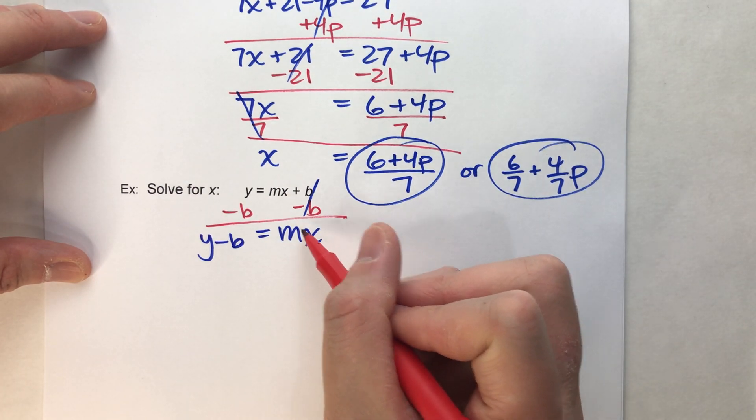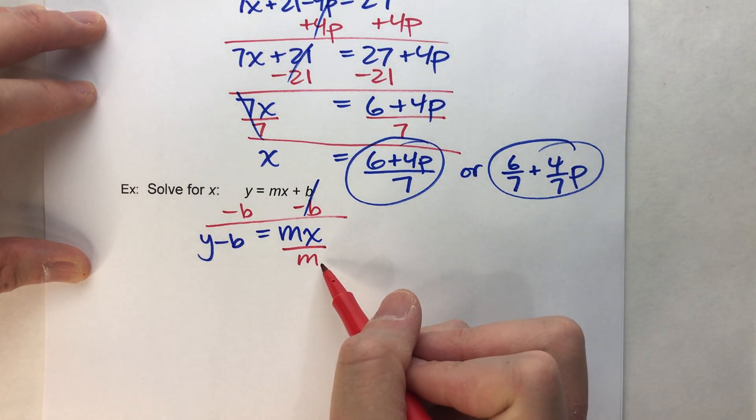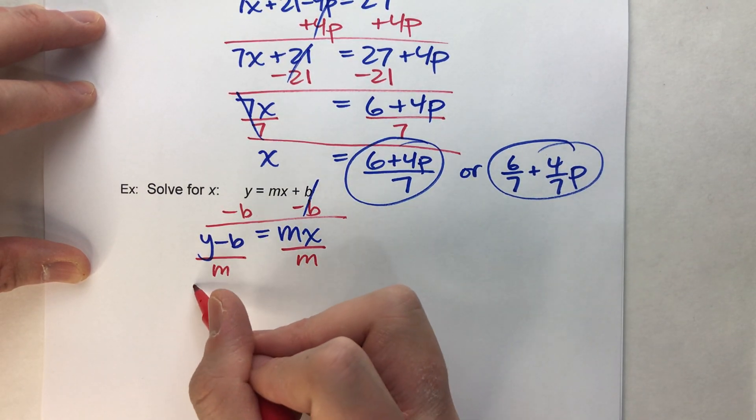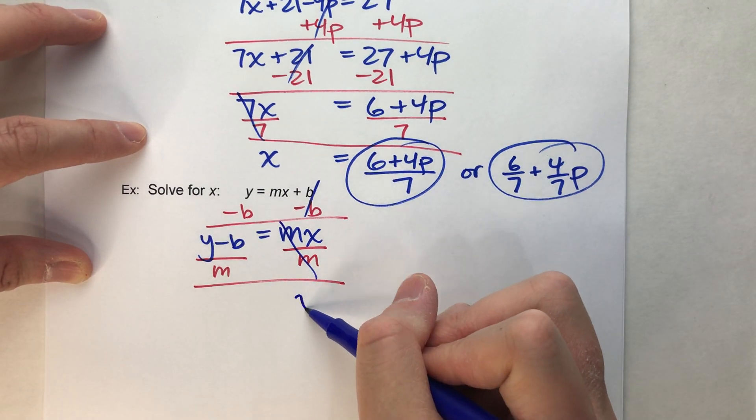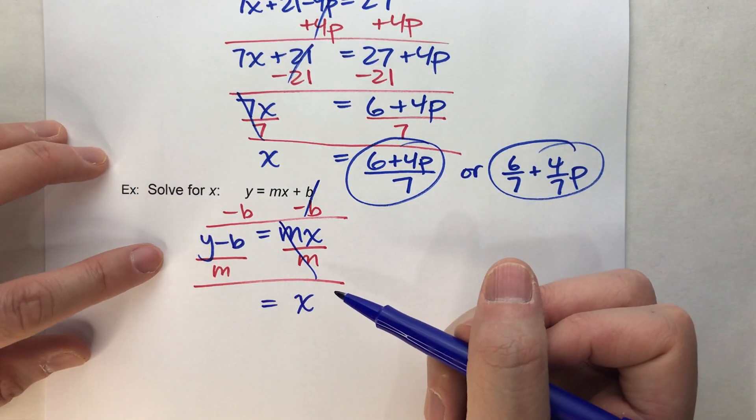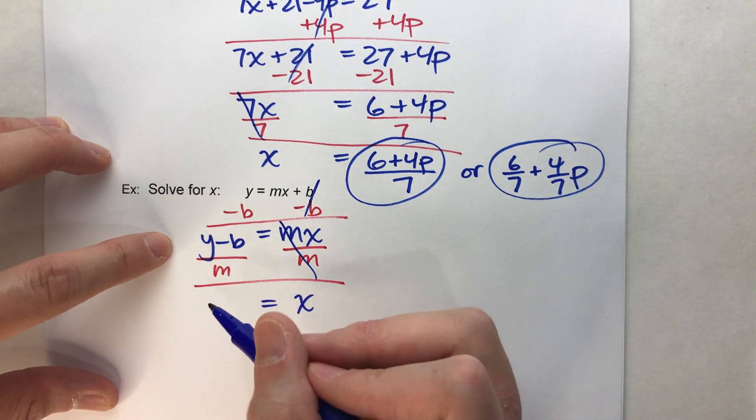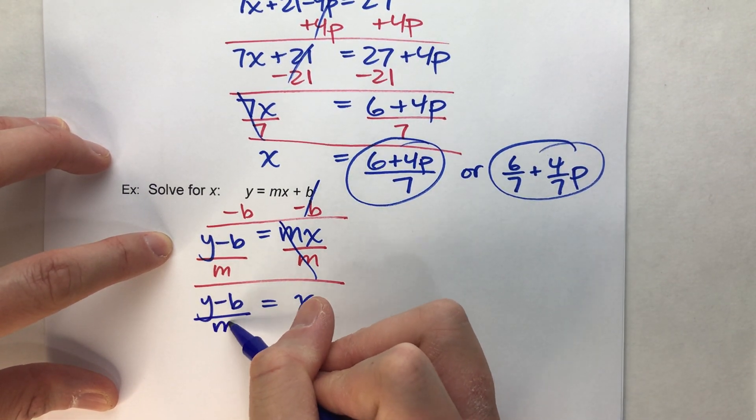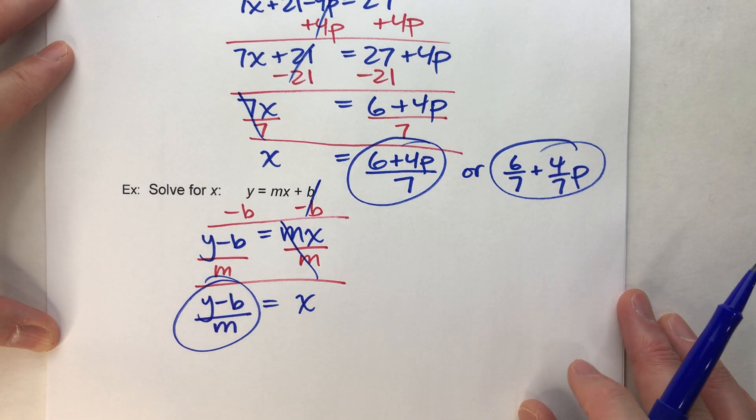Now I've almost got x by itself, but it says times m, so I need to divide by m. What I do to one side, I have to do to the other. When I do that, m's undo each other, the x drops down, the equals drops down, and I can't do y divided by m, and I can't do b divided by m, so I could leave it as y minus b divided by m. And, that's pretty much your answer.